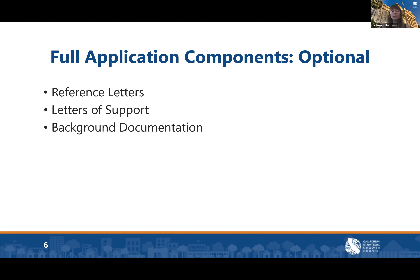Optional components include: reference letters — not required, but recommended to make a strong case for the applicants' ability to carry out the work plan activities. Letters of support are also welcome from partners who may not be formal members of the collaborative stakeholder structure but are engaged in some way, or who might benefit from the regional climate collaborative. Background documentation — for example, past work relevant to the RCC — is also welcome, but optional.